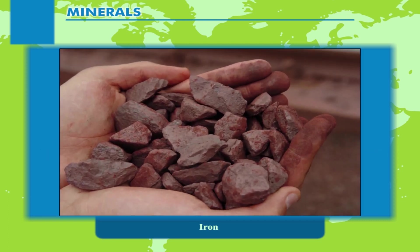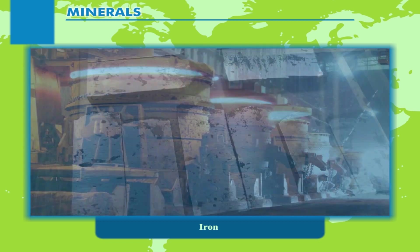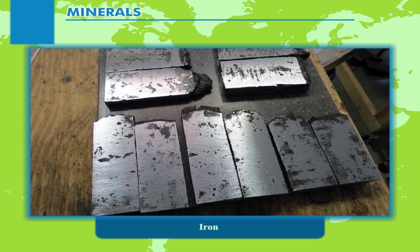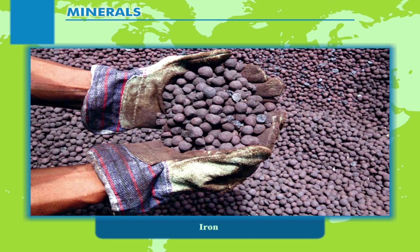Iron is the fourth most abundant element in the earth's crust. It is widely used all over the world for making machinery for industries. Strength, hardness, ductility, and magnetic properties are some of its unique qualities. Iron deposits are almost widely distributed in all the continents.